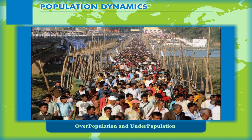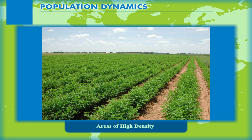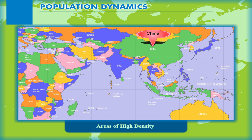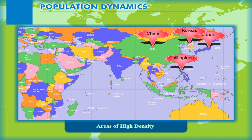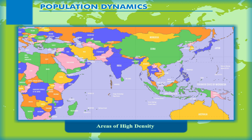Areas of high density have favourable climatic conditions, fertile soil for the development of agriculture, and a good network of transport and communication. China, Japan, the two Koreas and the Philippines in the east, and countries of the Indian subcontinent — India, Pakistan, Bangladesh and Sri Lanka — are densely populated. These countries comprise nearly half of the total world population.